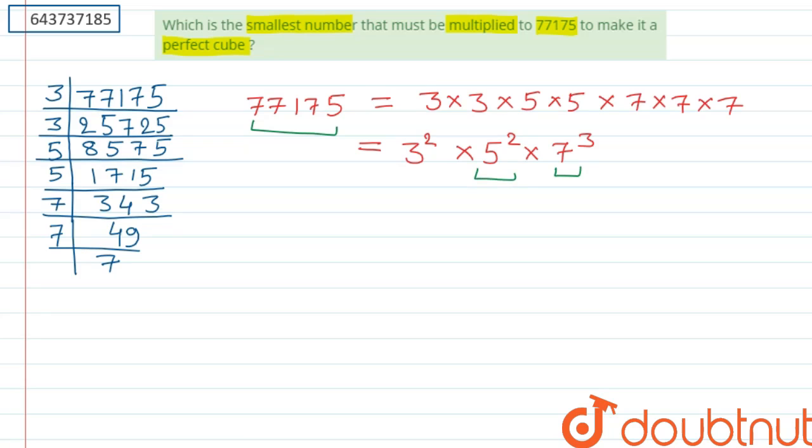But here the power of 5 is 2, so we need to multiply with 5. And again, the power of 3 is 2, so multiply this with 3. From here it will become 3³×5³×7³, so if we take cube root, it will be 3×5×7.